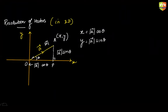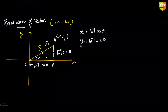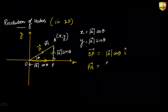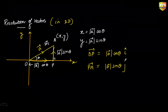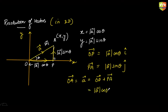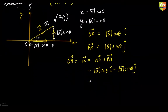Now think: to reach from O to A, you can take a path from O to P, then from P to A. O to P is nothing but |a| cos θ times i-cap (unit vector along x-axis). PA is |a| sin θ times j-cap (unit vector along the y-axis). So vector OA, which is vector a, equals OP + PA = |a| cos θ · i + |a| sin θ · j.